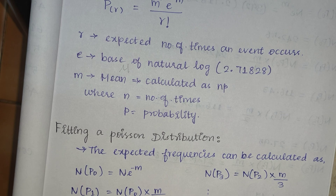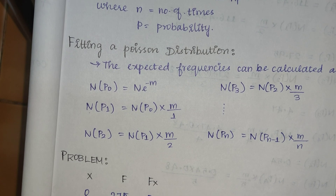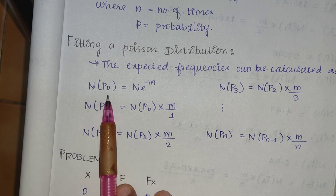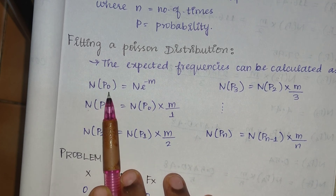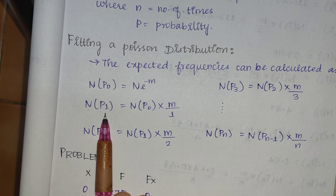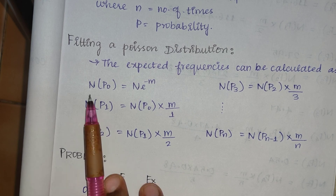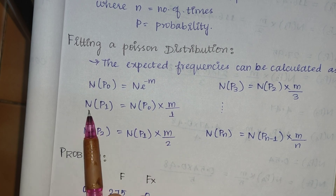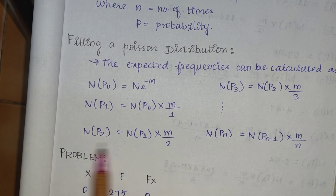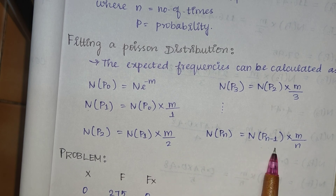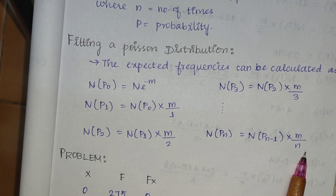This is the method for fitting the Poisson distribution using recursive frequencies. We calculate: n*p0 = n * e^(-m), then p1 = n*p0 * m/1, and p2 = n*p1 * m/2, continuing up to n*pn = n*p(n-1) * m/n.